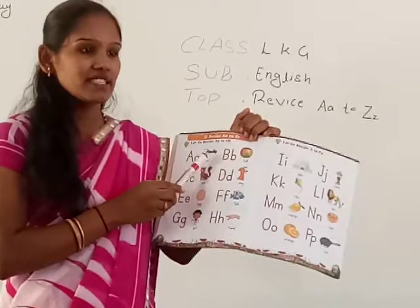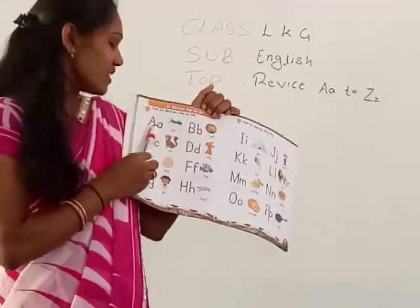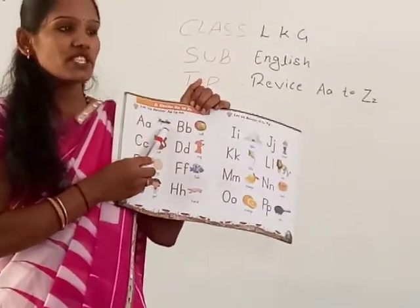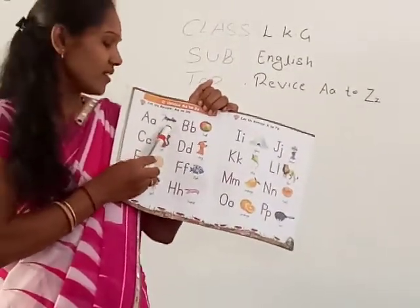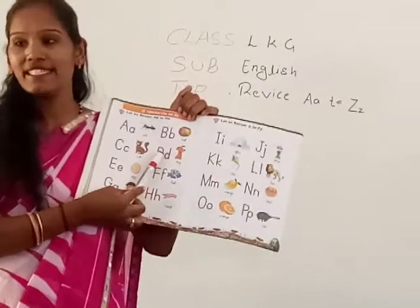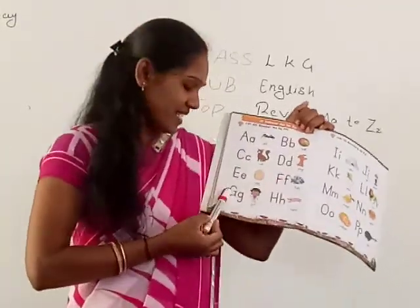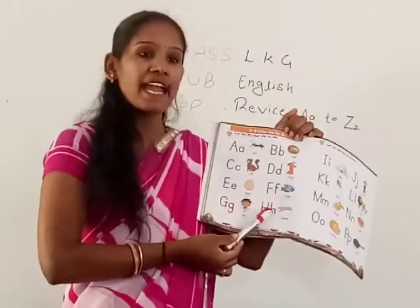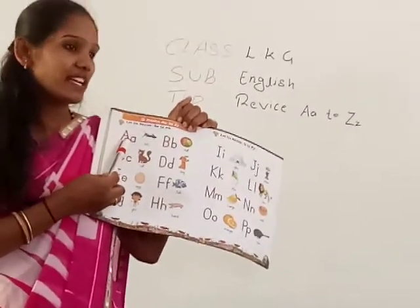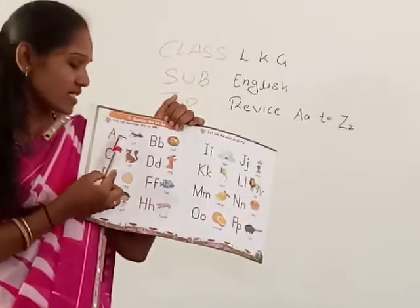A for? A for Apple. Yes. Which picture is it? This is a picture. And A for? B for? C for? D for? This is a big letter A, and this is a small letter. Capital A. Small A.